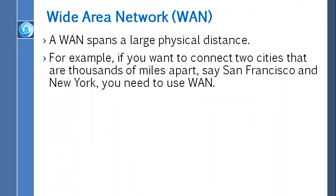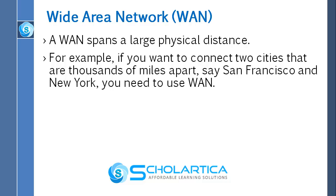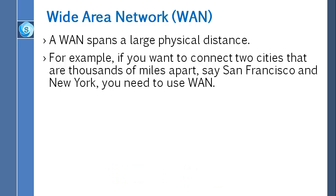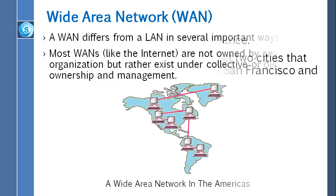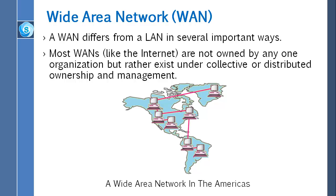As the term implies, a wide area network, or WAN, spans a large physical distance. For example, if you want to connect two cities that are thousands of miles apart, say San Francisco and New York, you need to use wide area networks. A wide area network differs from a LAN in several important ways. Most wide area networks, like the internet, are not owned by any one organization but rather exist under collective or distributed ownership and management.